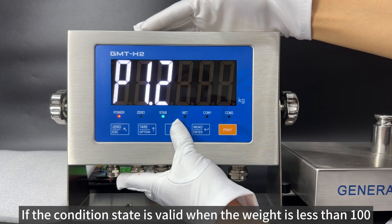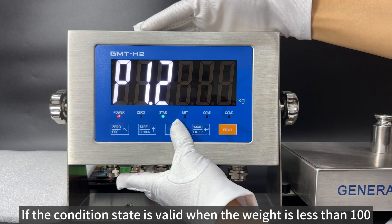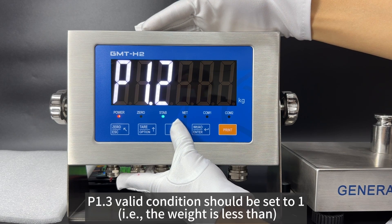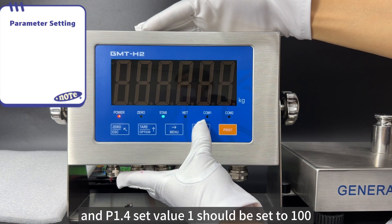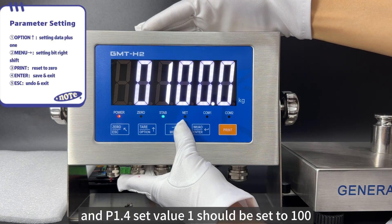If the condition state is valid when the weight is less than 100, P1.3 valid condition should be set to 1, and P1.4 set value 1 should be set to 100.